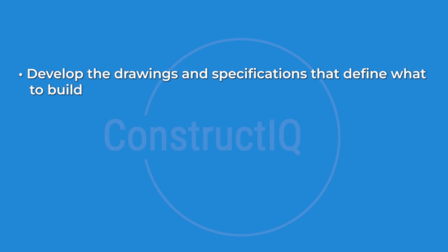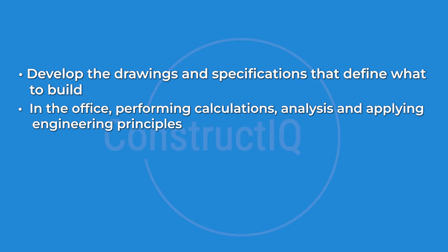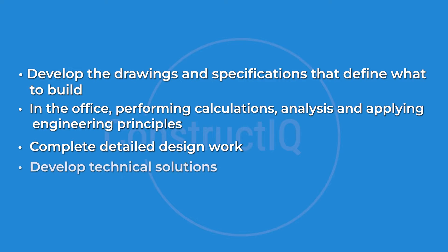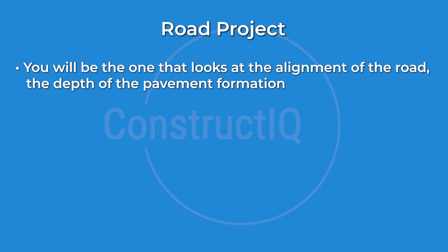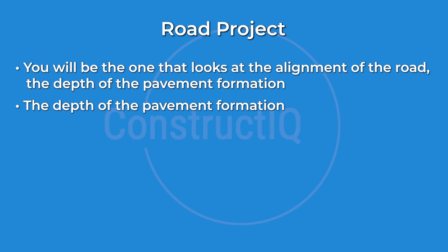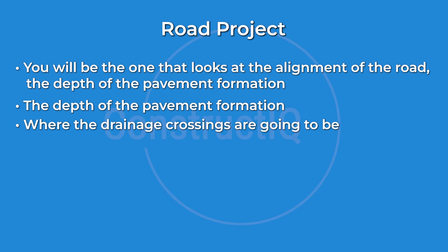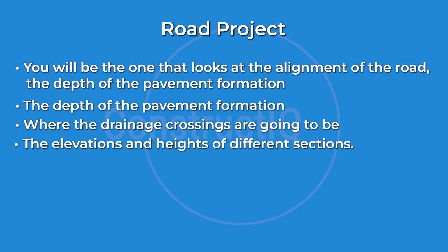Let's start with what a design engineer does. A design engineer develops the technical solution for a project. Their job is to develop the detailed drawings and specifications that define what to build. They'll be using engineering software, looking at the project requirements, and determining exactly what the technical solution is. For example, if you're a civil design engineer working on a road project, you'll be looking at the alignment of the road, the depth of the pavement formation, where the drainage crossings are going to be, and the elevations and heights of different sections.